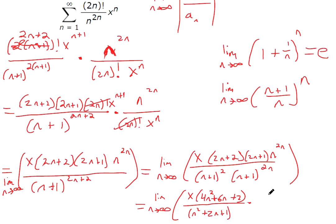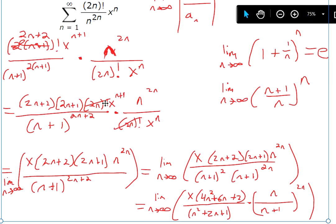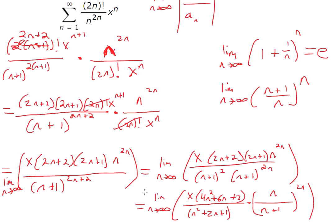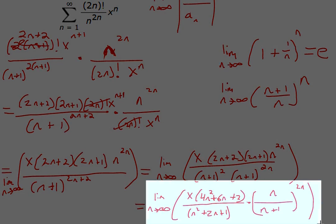But the whole point of rewriting this is now this is n over (n+1), all being raised to the 2n power. Because if you were to put this 2n power back on top, this would be n to the 2n like we have up here. And this would be (n+1) to the 2n over here. And now we can use our properties of limits. We can evaluate this limit separately from this limit.